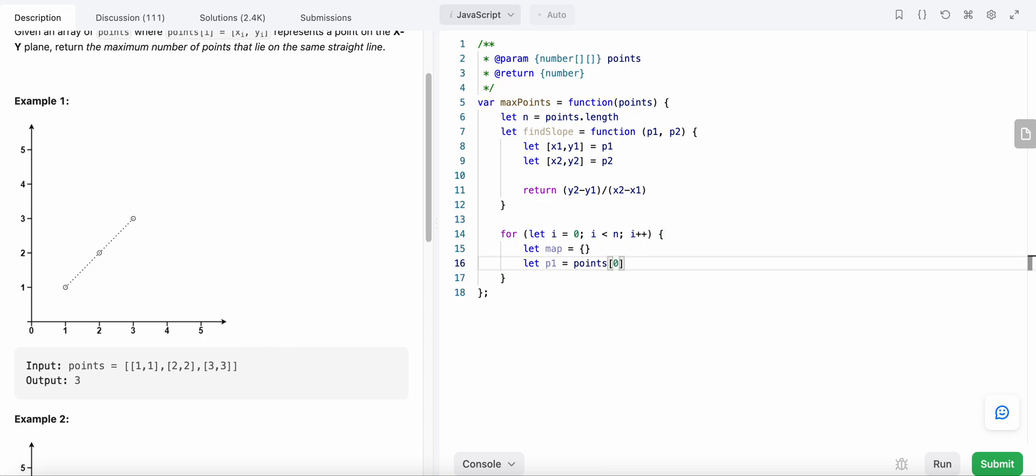points[i]. Now this is our fixed point here. We would iterate over each of the remaining points and find the slope. For let j equals zero, j less than points.length, j++. One thing we need to keep in mind is that these points would not be the same as this point, so if j equals i, then we continue.